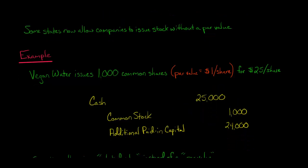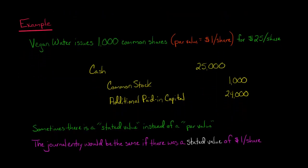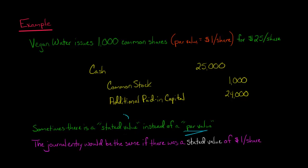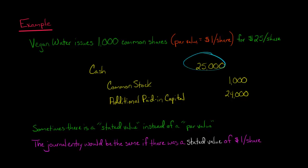In some cases you'll see a stated value instead of a par value. I won't go into all the details of that, but the journal entry would be the same — you'd be debiting cash and then crediting common stock and crediting additional paid-in capital; it would just be labeled paid-in capital in excess of the stated value.